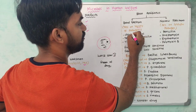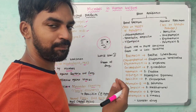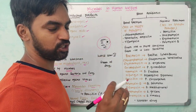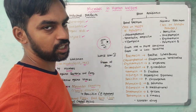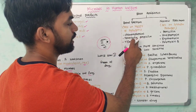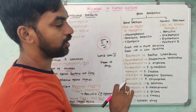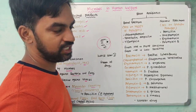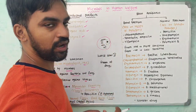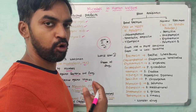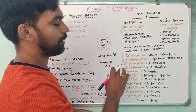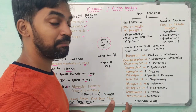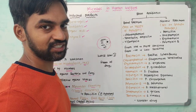Broad spectrum antibiotics act against a variety of pathogens. Narrow spectrum antibiotics act on a specific or particular pathogen. Broad spectrum examples include chloramphenicol, tetracycline, ampicillin, and rifampicin. Narrow spectrum examples include penicillin, streptomycin, erythromycin, and polymyxin B.